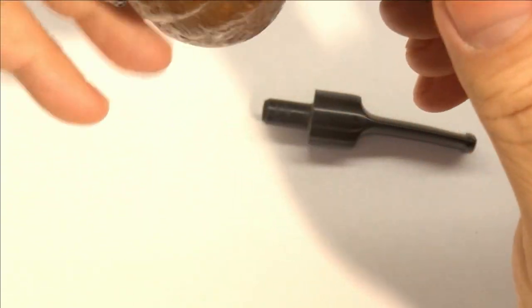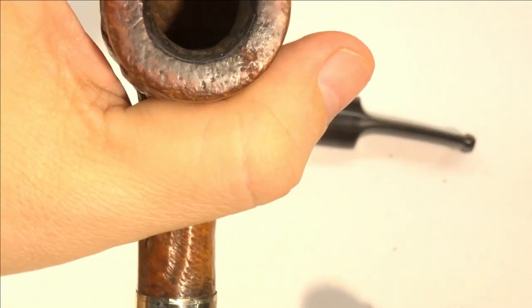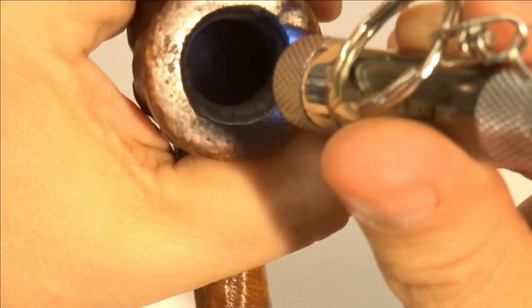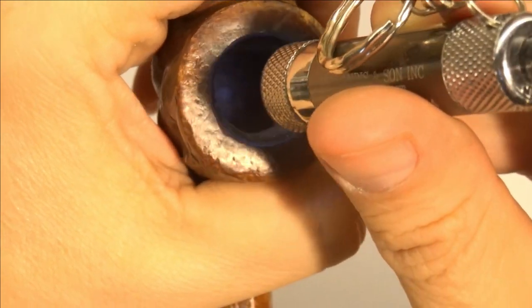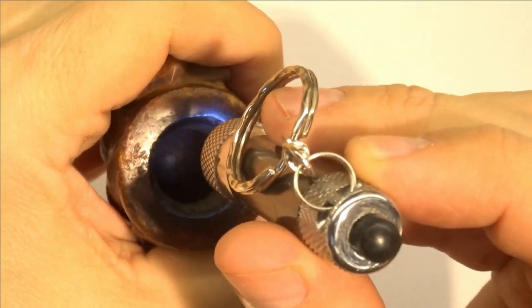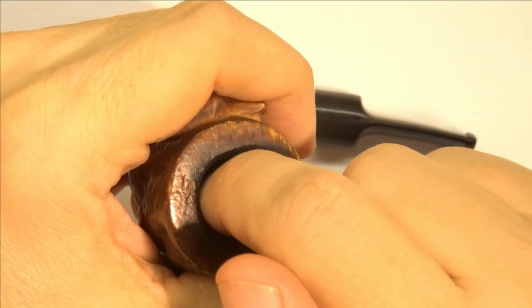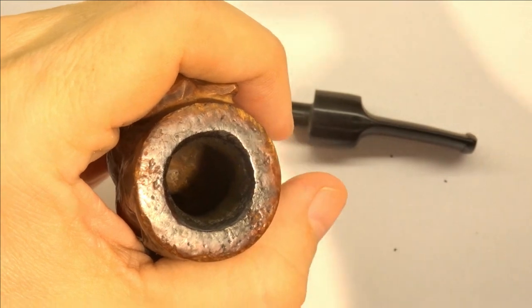For the most part, the stummel is in very good shape. The bowl interior needs a little bit of reaming, not too much, but just a tad bit of reaming around the edges. Actually, the bottom is reamed up, but the edges have some buildup that I want to take down.